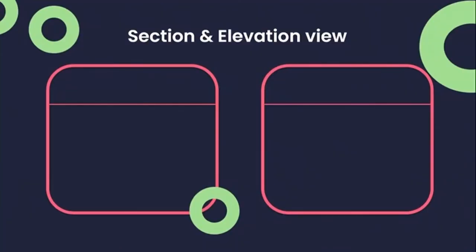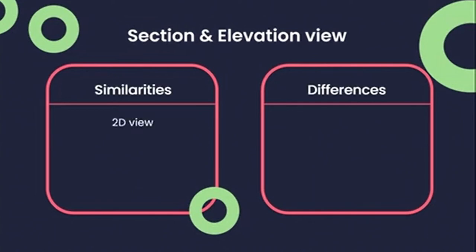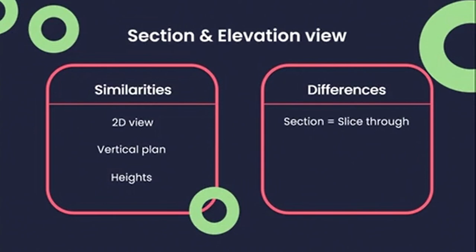Elevations and sections have many similarities, but there's one main defining difference. They are both generally 2D views — though can be 3D for presentation — and both show a vertical plane and heights. The main difference is that the section is a slice through an object or building, whereas your elevation is not.